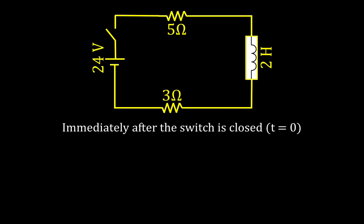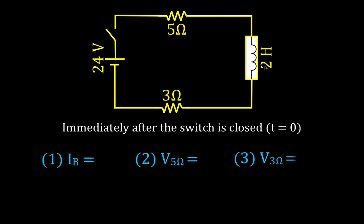We have one more circuit: 24 volts, two resistors this time, and one inductor. You could pause the video now and try to figure out the current in the circuit, the voltage across the 5-ohm resistor, the voltage across the 3-ohm resistor, and the voltage across the inductor. Try to answer those questions — it's kind of like a puzzle. Not a lot of math involved; it's meant to test your conceptual understanding.